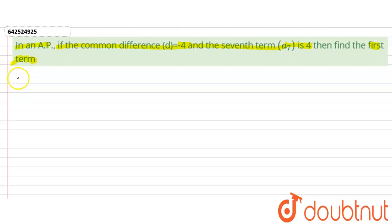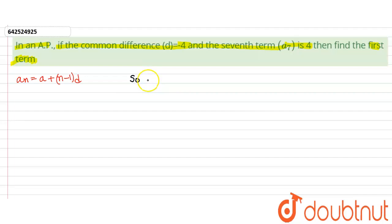For any AP, the nth term of any AP with first term a and common difference d is given by this formula. Now, in our case, we need to find the first term. So let the first term be A.